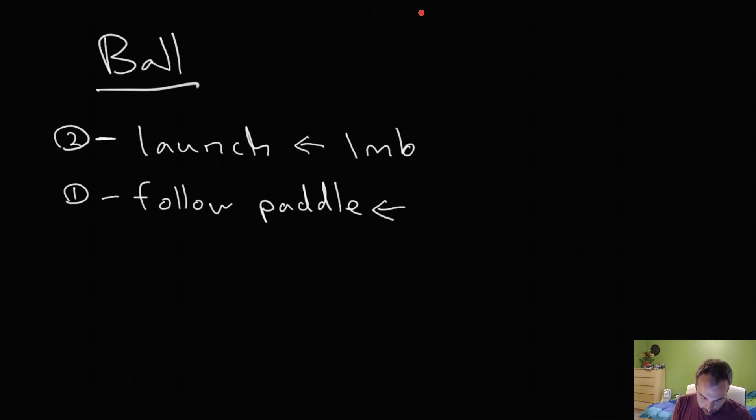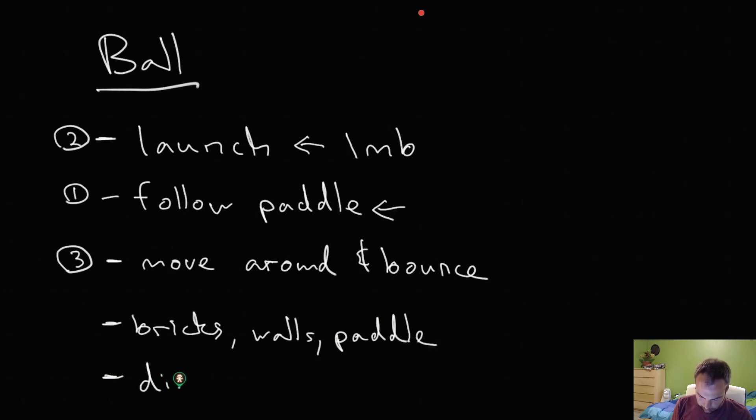And then once it's launched, it's now in its third state, which is basically just move around and bounce. So like that's its main task. It does need to hit bricks, walls, and the paddle. And it also needs to be able to die. So dying will happen when the ball goes off screen. So I can actually list it on here. So when it's outside the room, when the ball's outside the room, it's going to die. And the ball, the graphic for the ball is just going to be a circle. And that's it.